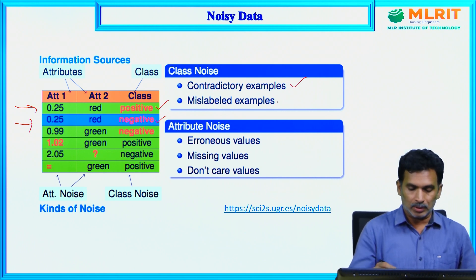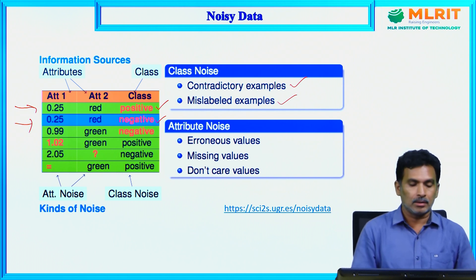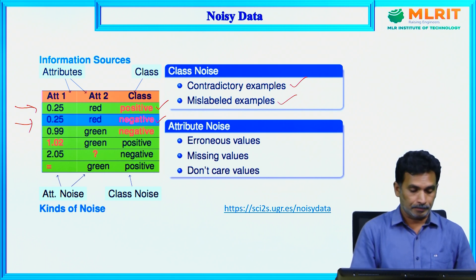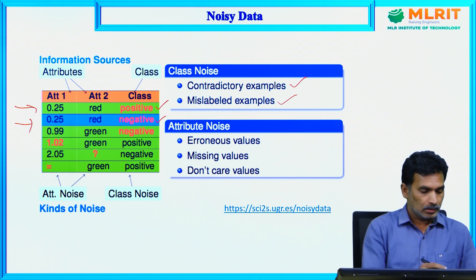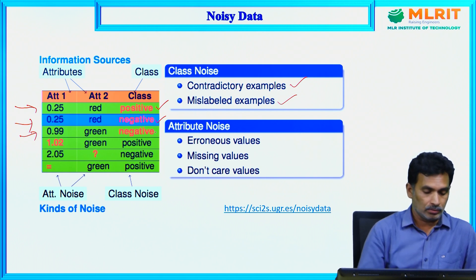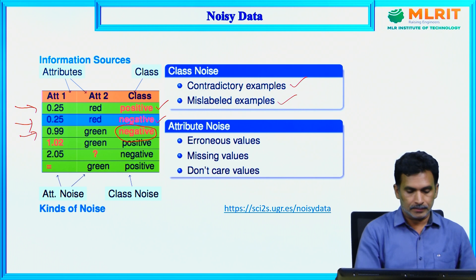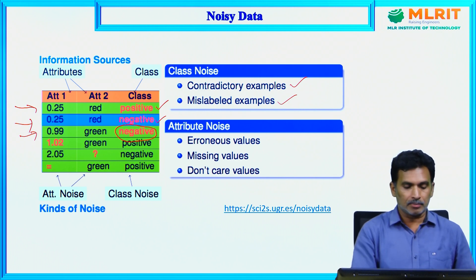Another example is mislabeled examples, meaning incorrect class labeling. Sometimes class labeling is done manually, so typos or errors can occur. For example, in the third record with values 0.99, green, and negative — suppose it is actually positive but mislabeled as negative. That is another type of class noise.